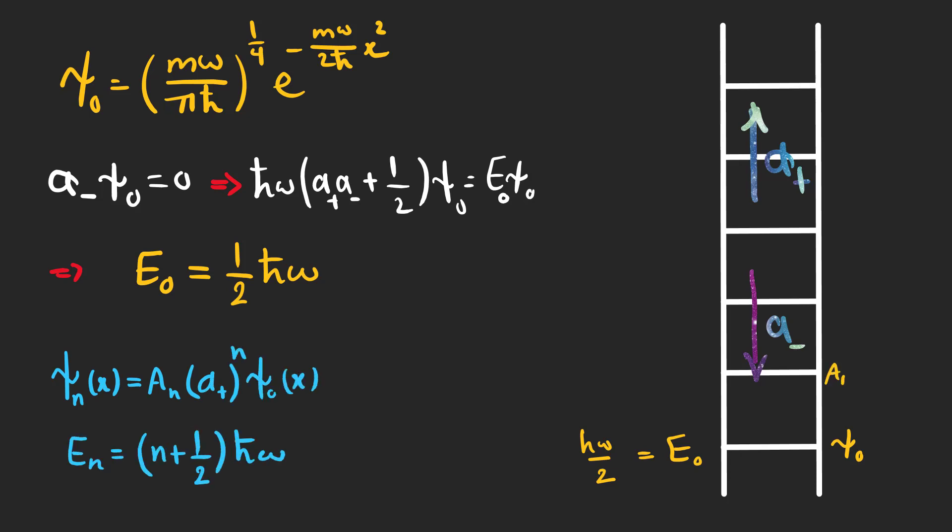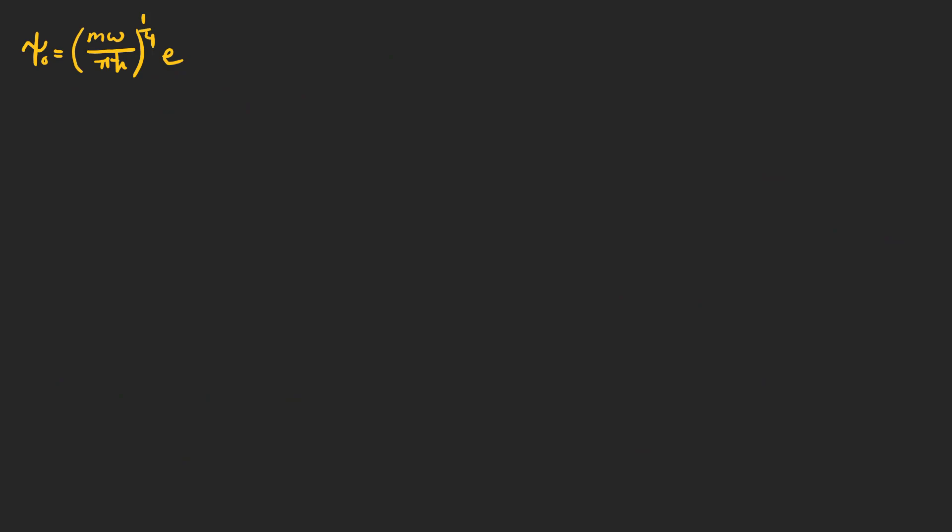So, for our excited states, we have these expressions. To find the normalization coefficients a1, a2, to an, we can use the following method. a plus psi n is proportional to psi n plus 1. And a minus psi n is proportional to psi n minus 1.